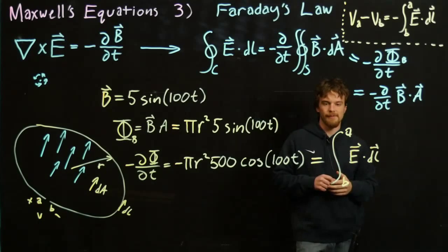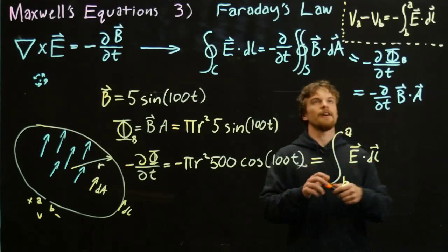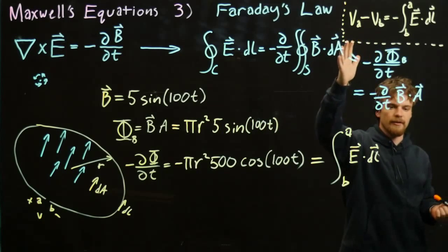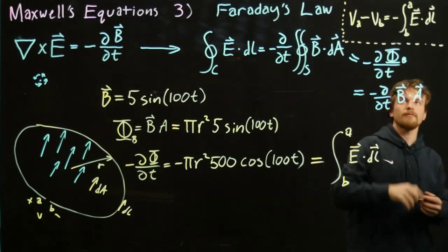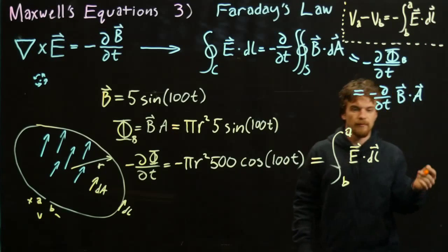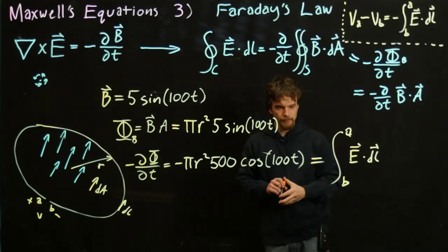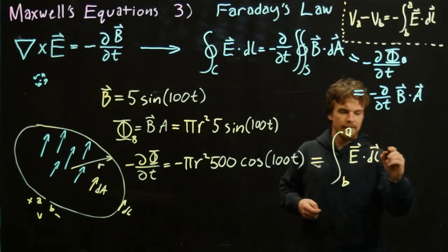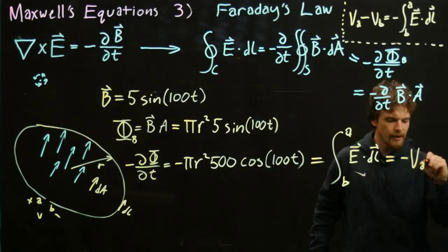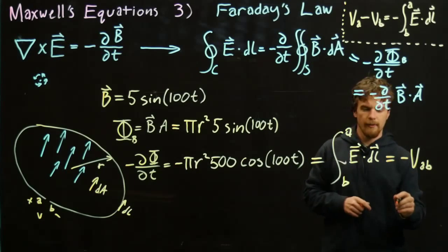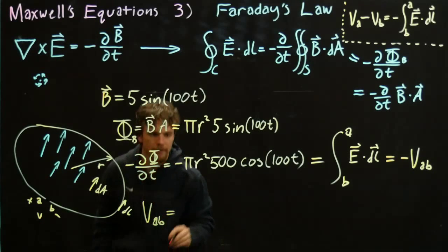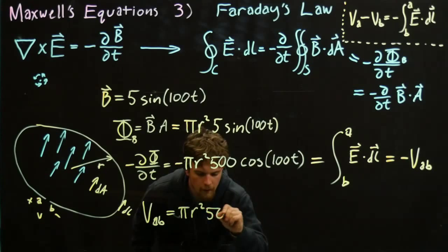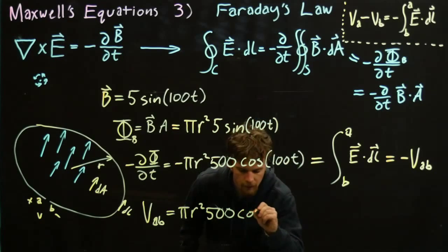That looks familiar from our definition of voltage: V_A minus V_B equals the negative integral from B to A of E·dL. We almost have that here — it's just missing a negative sign. So if this equals the negative voltage between A and B, then we can say the voltage between A and B equals the negative of our result: V_AB = πr²·500·cos(100t).